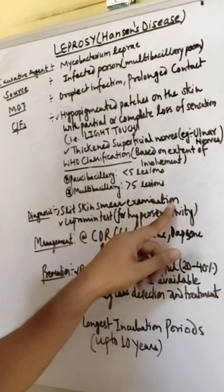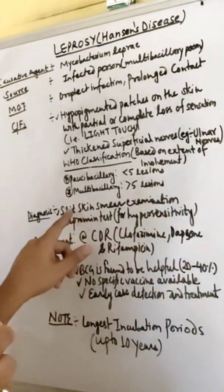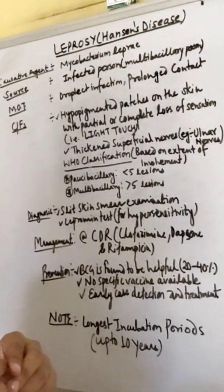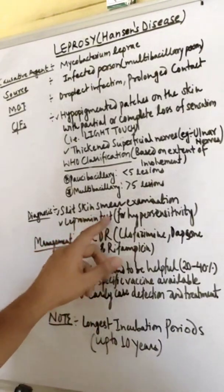Wherever the part is not feeling sensation or light touch, we will do slit skin smear biopsy. Lepromin test is done for hypersensitivity. Management includes CDL: clofazimine, dapsone, and rifampicin. Rifampicin is also given in the case of TB.